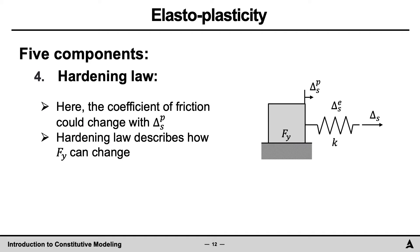The fourth item in elastoplasticity is the hardening law. In this example, the hardening law describes how the yield force Fy changes. For example, the yield force could be defined to change with, say, the plastic displacement.